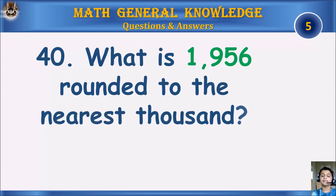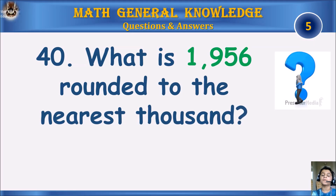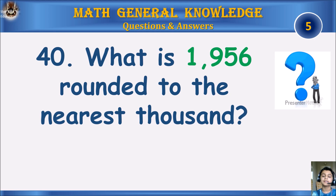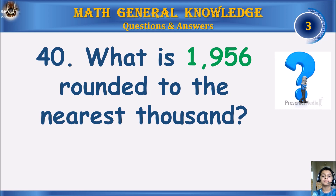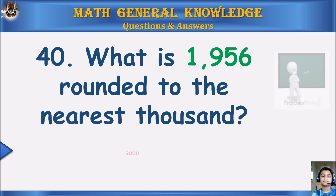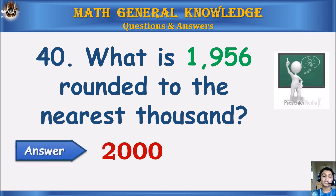What is 1956 rounded to the nearest thousand? Your time starts. Answer: 2000.